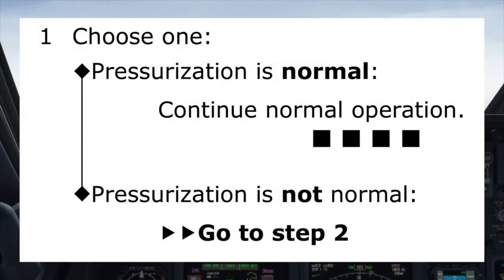Returning to the checklist, we choose the path for normal pressurization, which states to continue normal operation. The four black boxes underneath indicate that in this situation — a door light illuminated with normal pressurization — the checklist is complete. However, let's find out the difference if the pressurization was not normal.